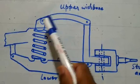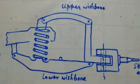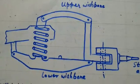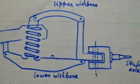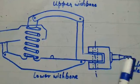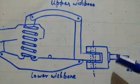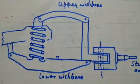As you can see this is the upper wishbone or arm and this is the lower wishbone or lower arm and this is the stub axle on which the wheel is mounted.